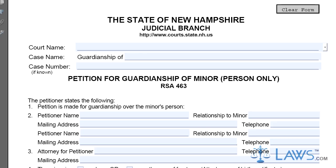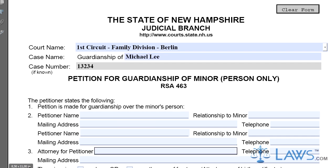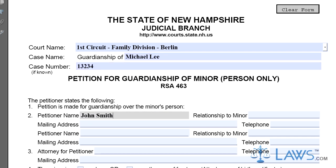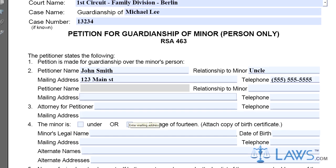Step 1. Parts 1, 2, 3, and 4 require the petitioner to provide legal names, contact information, and more for the petitioner, the attorney of the petitioner, and the minor.